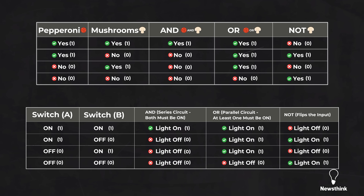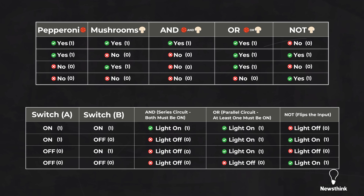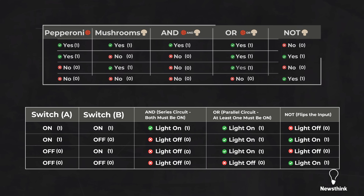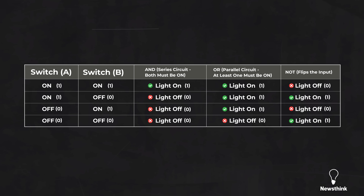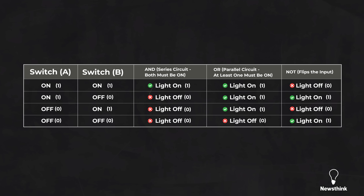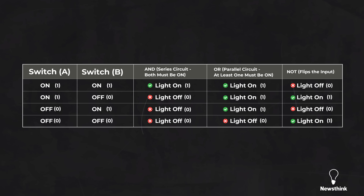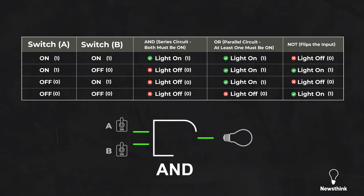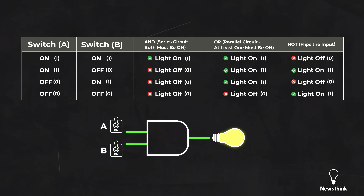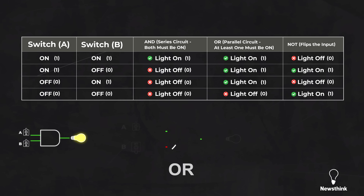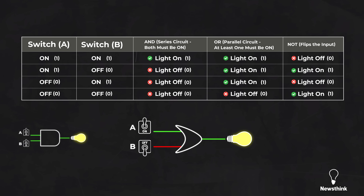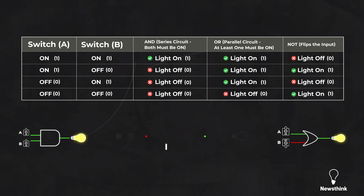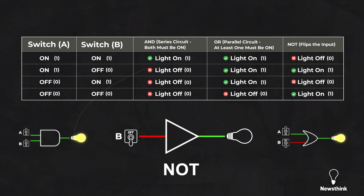Shannon realized this same Boolean logic applied to electrical circuits. In a circuit, one — on — means the switch is closed, allowing electricity to flow. And zero — off — means the switch is open, stopping electricity flow. For the AND logic gate, the light turns on only if both switches are on. For the OR gate, the light turns on if at least one switch is on. The NOT gate flips the state of exactly one input — in this example, switch B.